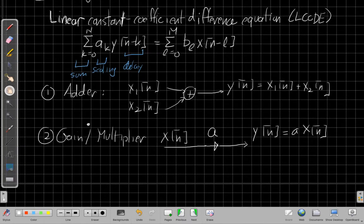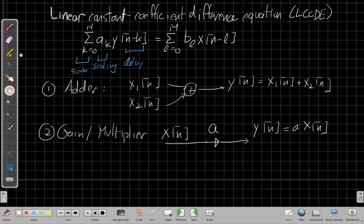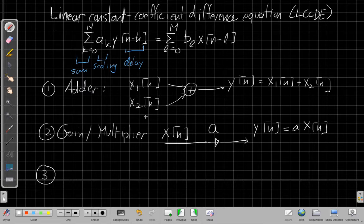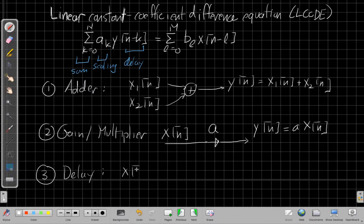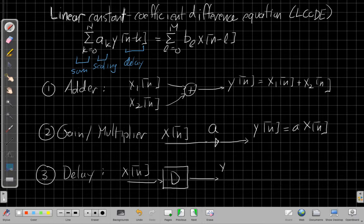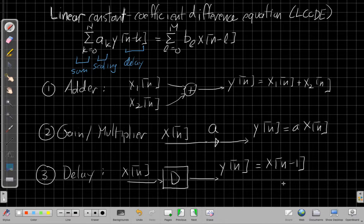And then the last one is the delay part. We need to be able to delay an output or an input for these terms here. So the third piece of this is a delay. And so that block right now will represent as a box just a big D in it, so D for delay. And so the output of this box is just the input delayed by one sample.